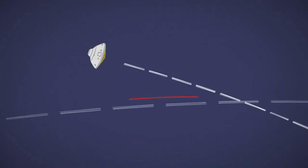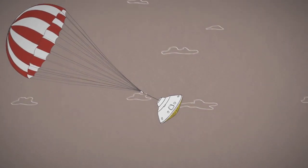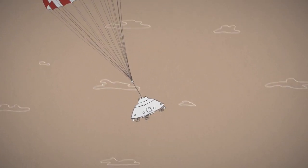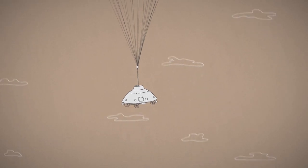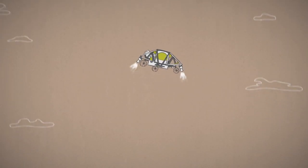Curiosity must hit the atmosphere at just the right angle, endure extreme heat from friction as it descends through the atmosphere, open its parachute at just the right time, use radar to know exactly how high it is, free itself from the parachute, and perfectly fire eight rocket engines to slow final descent.